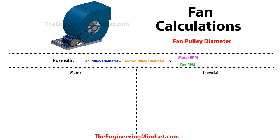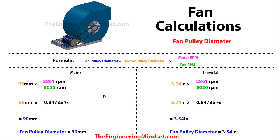So the first one we're going to look at is calculating the fan pulley diameter. You can see I've split the screen into two here, so we're going to have the metric and imperial calculations. I've tried to colour code everything throughout the video — I find it just makes it a lot easier to follow the numbers. The formula we need is: the fan pulley diameter is equal to the motor pulley diameter multiplied by the motor RPM divided by the fan RPM. We can get these figures from the manufacturer, or if you haven't already purchased the equipment, you can look it up online. For the fan, that's going to be the RPM you need to provide a certain ventilation or airflow rate. And for the motor, this is the RPM that it's going to rotate at.